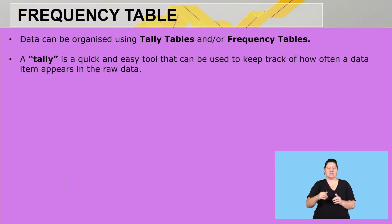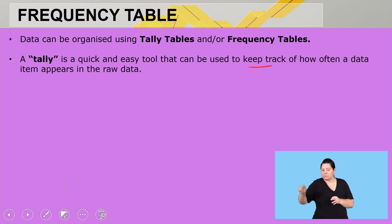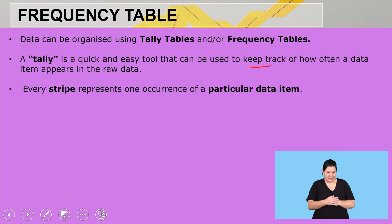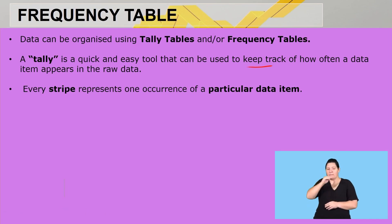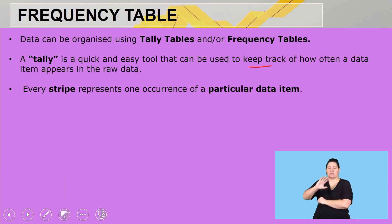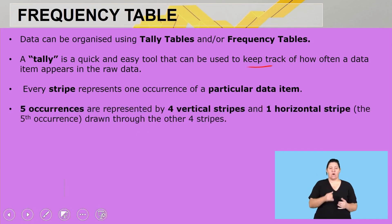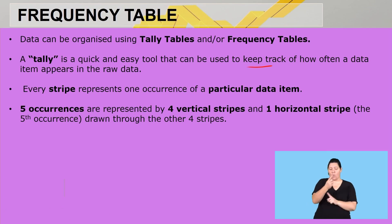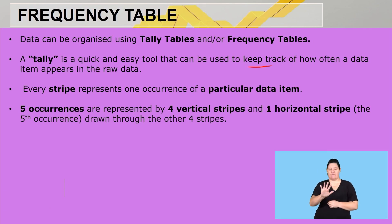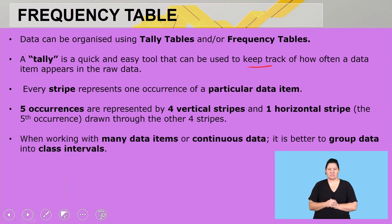A tally is a quick and easy tool used to keep track of how often a data item appears in the raw data. In a frequency table, every stripe represents one occurrence of a particular data item. Five occurrences are represented by four vertical stripes and one horizontal stripe drawn through the other four.